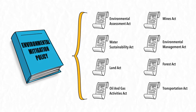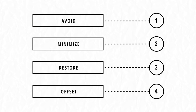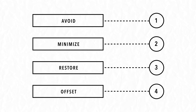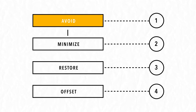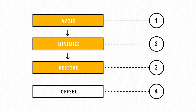The foundation of the policy is the mitigation hierarchy — a stepwise way to consider avoiding impacts, minimizing impacts, and restoring areas before moving to the final option: an environmental offset.